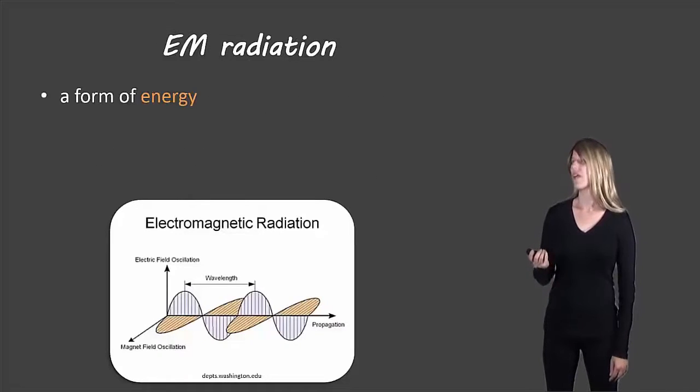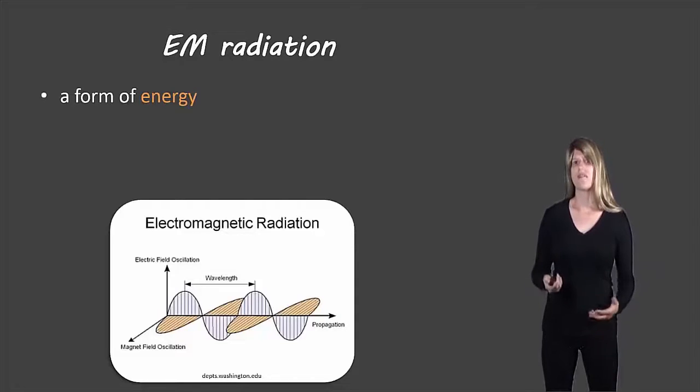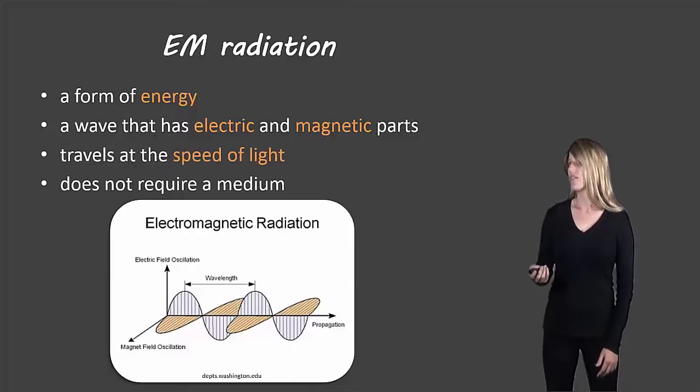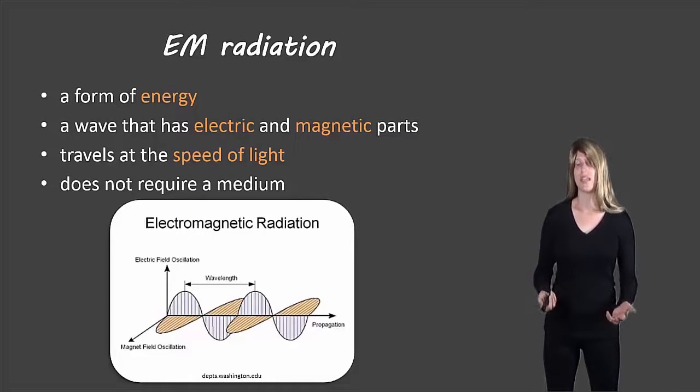So first of all, electromagnetic radiation is a form of energy. It's a wave that has electric parts and magnetic parts, which is why it's called electromagnetic radiation. It does not require a medium to travel, so it doesn't need to be in air, it doesn't need to be in water. It can just travel, and it travels at the speed of light.